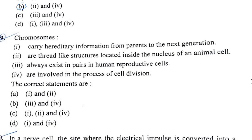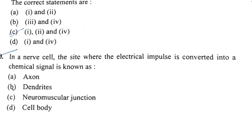Question 9: Regarding chromosomes, the correct statement is that they carry hereditary information from parents to the next generation. They are thread-like structures that always exist in pairs. The statement that they are involved in the process of cell division is wrong, so option C is the answer.